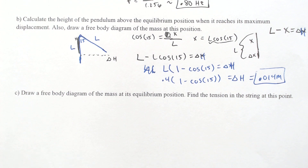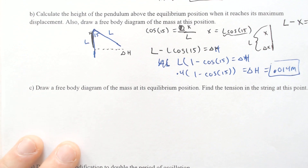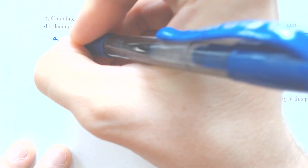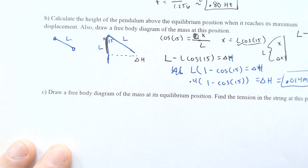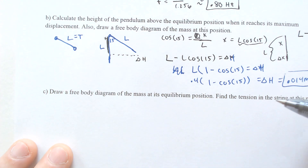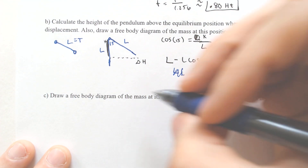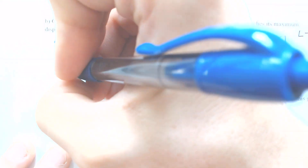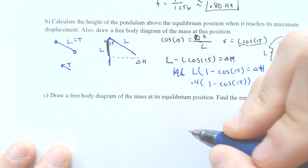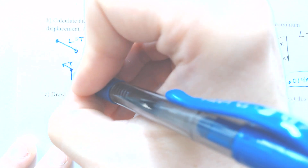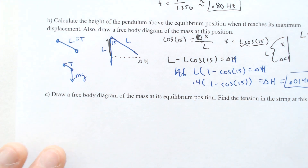For the free body diagram at that moment: you have your pendulum at maximum displacement. The force of tension points upward along the string, and the force of gravity, which is mg, points downward.